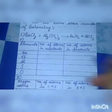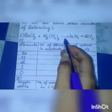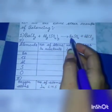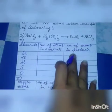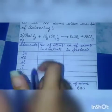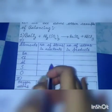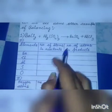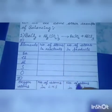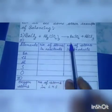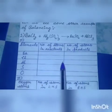First of all, we have to write the unbalanced equation. And your second step is to list the number of atoms of the various elements present in the unbalanced equation in the form of a table.